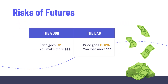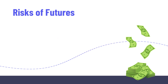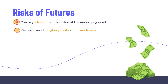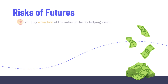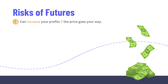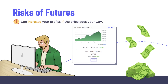This can be both a good and a bad thing depending on how the price moves relative to your position. Since you only pay a fraction of the total value of the underlying asset when you buy the futures contract, you get exposure to both much higher profits and lower losses. Trading on margin can amplify your losses if the price moves in an unfavorable direction, or increase your profits if the price goes your way.